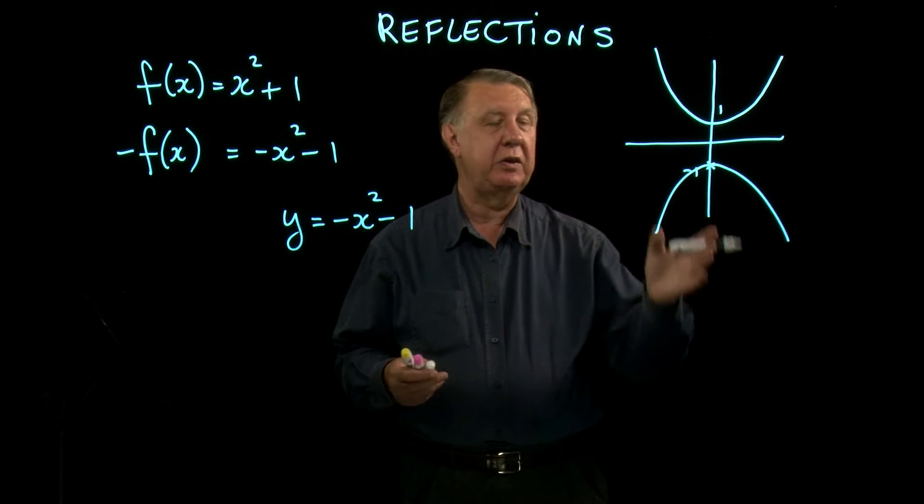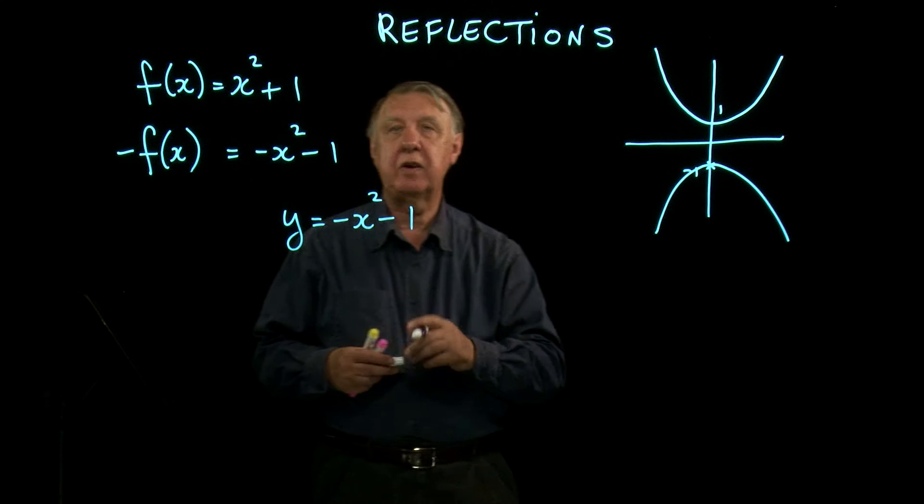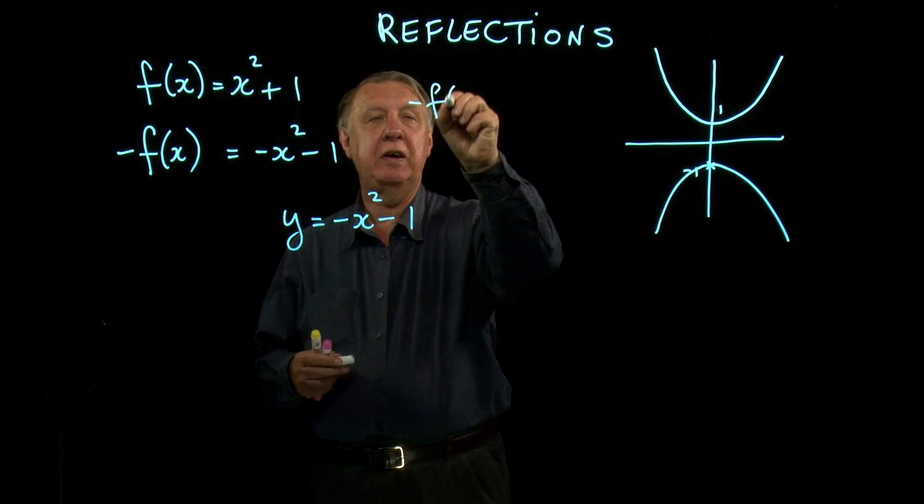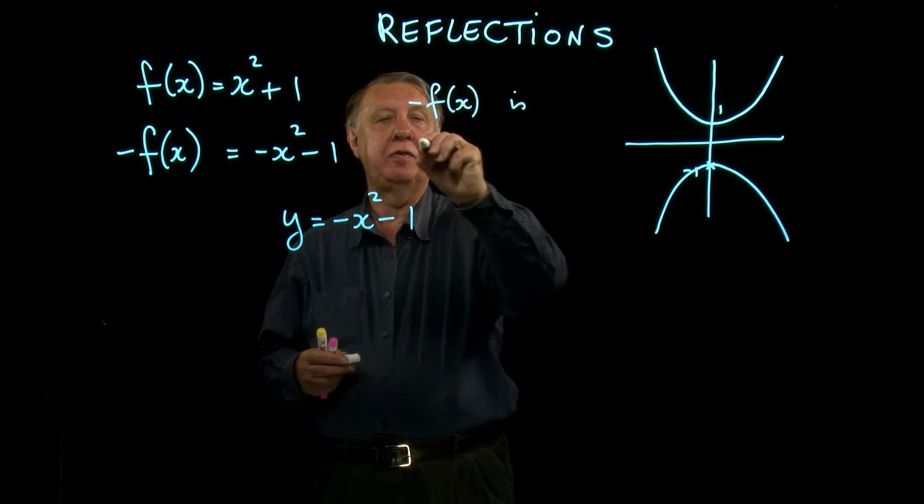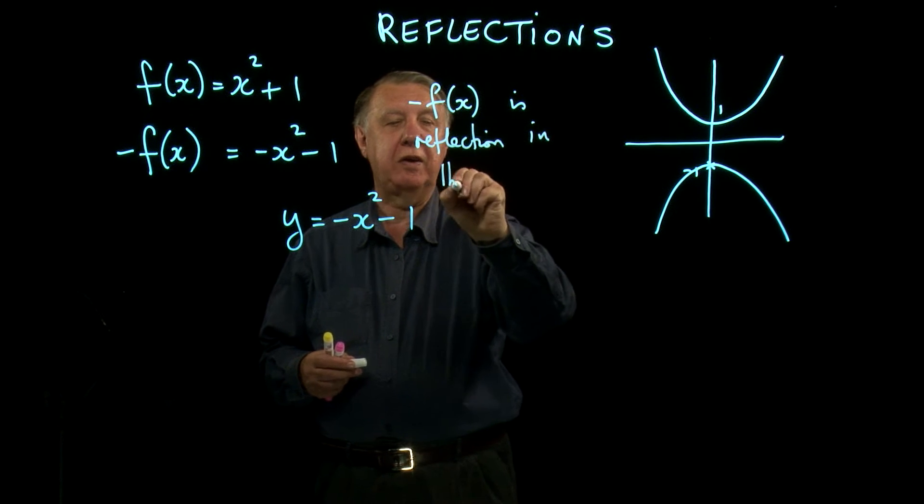That's done. Done and dusted. That means reflection in the x-axis. So negative f(x) is reflection in the x-axis.